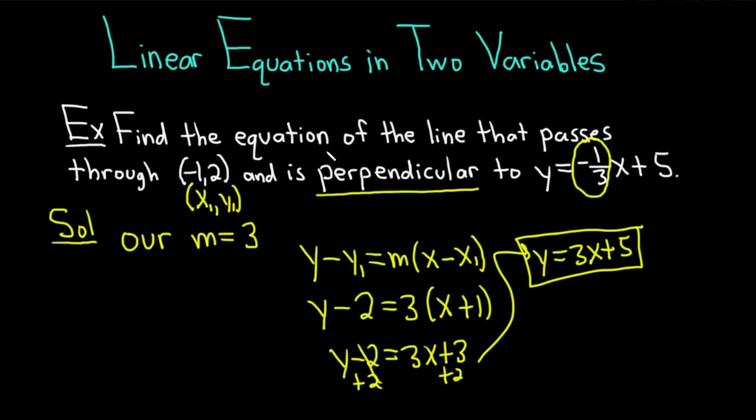Again, whenever you have a line that's perpendicular to another line, the slope of your line is the negative reciprocal. You just flip it and put a negative. What if it said parallel? Let's think about that for a moment.